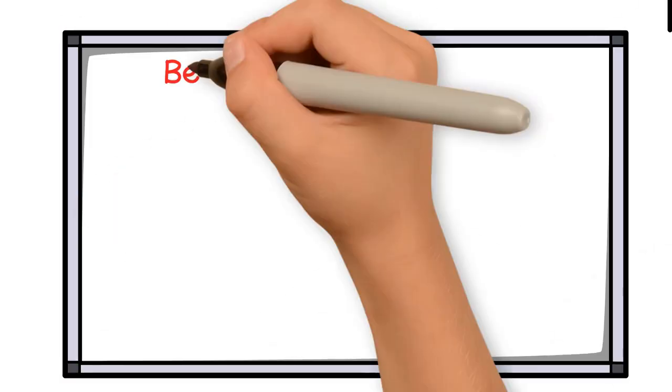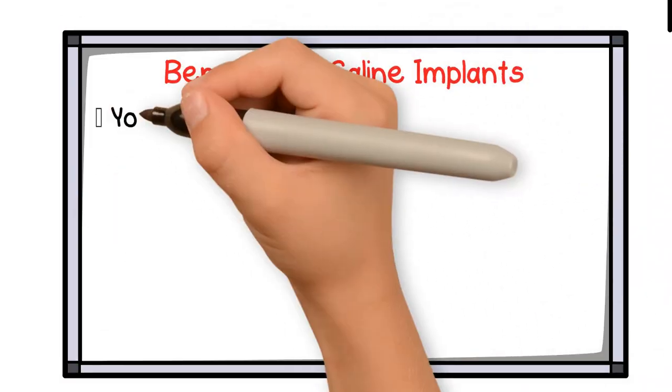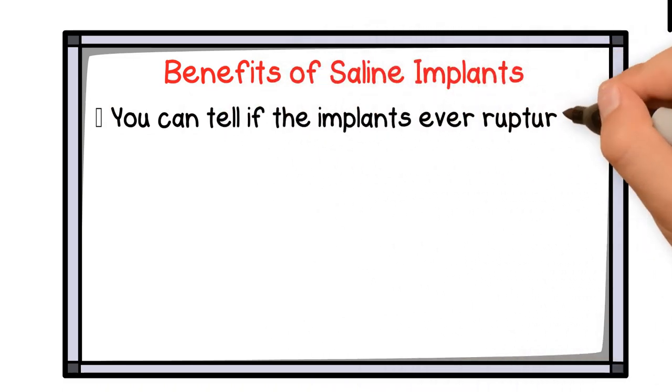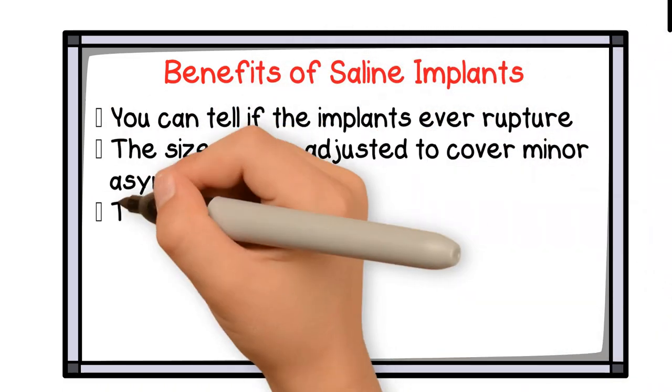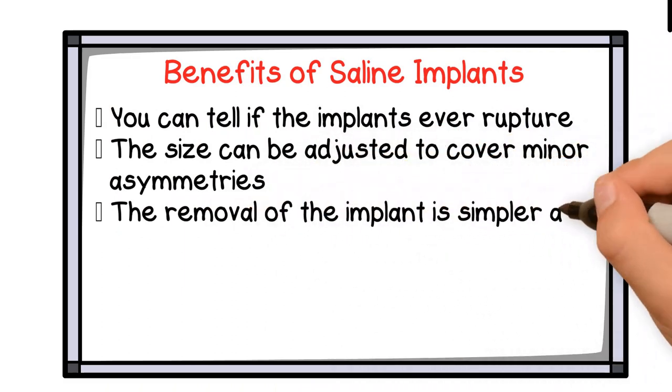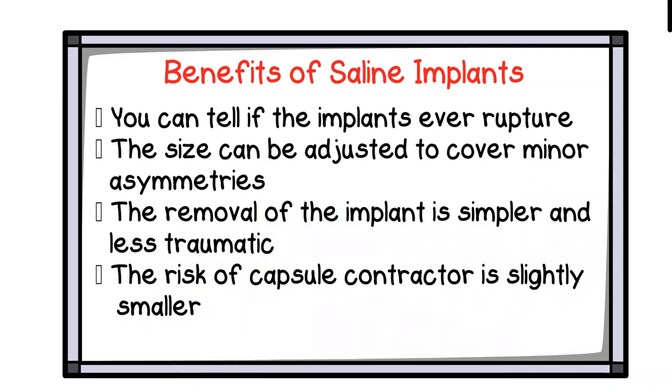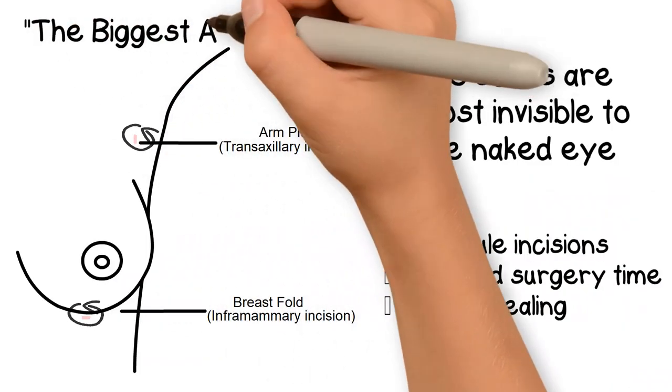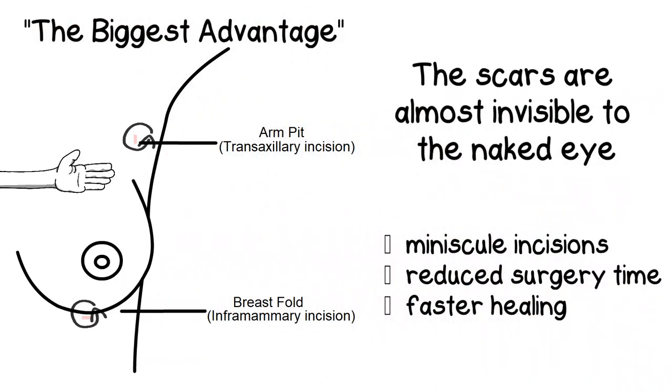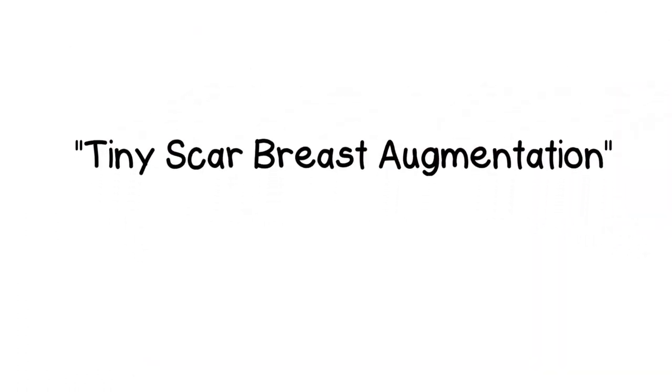The benefits of saline implants are: you can tell if the implant ever ruptures, the size can be adjusted to cover minor asymmetries, the removal of the implant is simpler and less traumatic, the risk of capsule contracture is slightly smaller. But the biggest advantage to using saline is that it only requires a minuscule incision to insert the implant, and hence the name tiny scar breast augmentation.